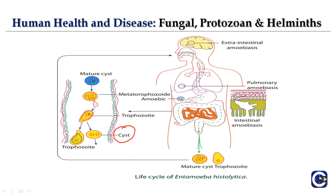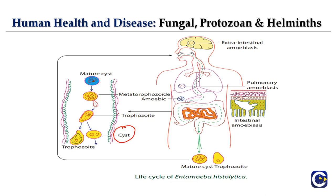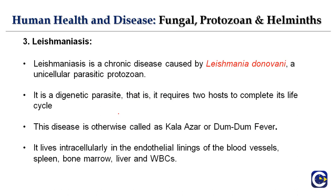Symptoms of amoebiasis include constipation, abdominal pain and cramps, and stool with excess mucus and blood cells. The difference between diarrhea and dysentery is that diarrhea is just loose stool, but dysentery involves blood coming out as well. The infectious stage is the cyst — they enter as cysts and convert into trophozoites. If untreated, it can spread from the intestinal part to other organs of the body, developing into pulmonary amoebiasis.